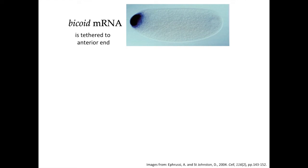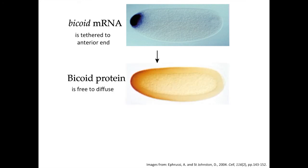When the egg is fertilized and the nuclear divisions begin, Bicoid messenger RNA is translated into the Bicoid protein. The Bicoid protein, stained here in brown, is free to diffuse throughout the cytoplasm and forms a concentration gradient — the highest concentration at the end where the messenger RNA was tethered, and decreasing concentration further away over about a third of the length of the embryo, as shown here.